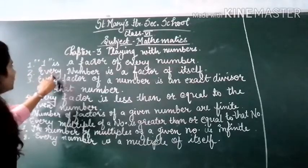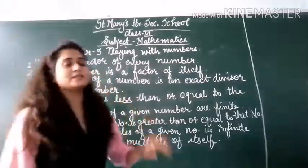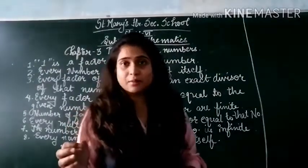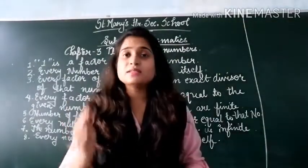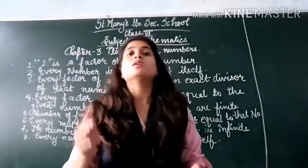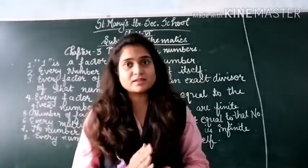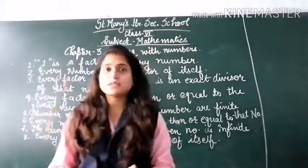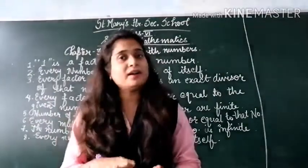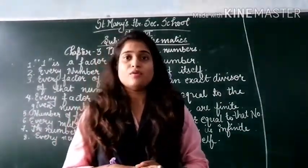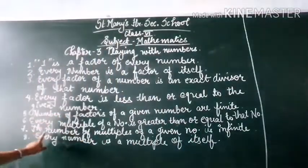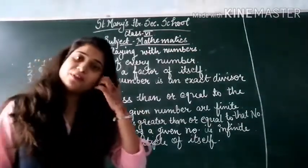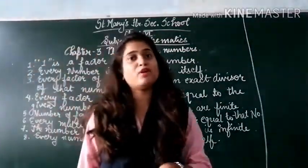Second point: every number is a factor of itself. If 6 is the number, then 6 is the factor of itself. 6 is the last divisor or last factor of itself — after 6, there is no other number which will divide 6. The same applies for multiples as well: every number is a multiple of itself.